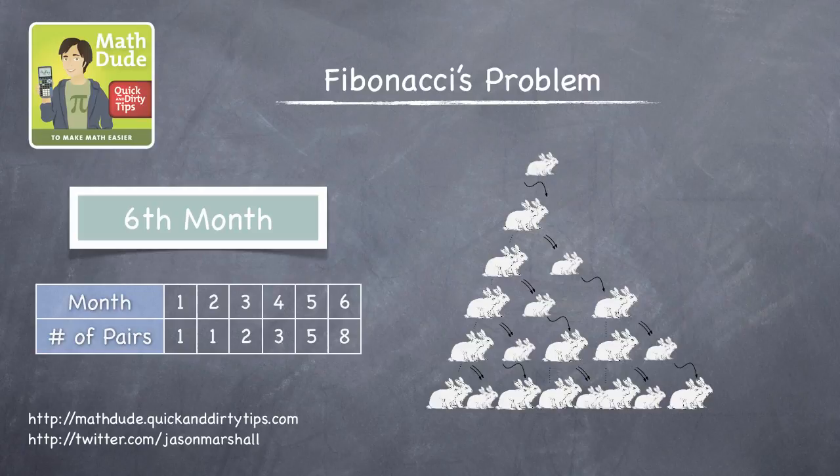At this point, the sequence is 1, 1, 2, 3, 5, 8. What's the pattern? The trick is that each number in the Fibonacci sequence is obtained by adding together the previous two.